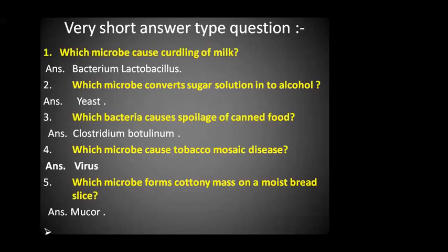Let's move to very short answer type questions. Which microbe causes curdling of milk? The bacterium is Lactobacillus. Question number 2: which microbe converts sugar solution into alcohol? The answer is yeast, which is a fungus. Third: which bacteria causes spoilage of canned food? A bacteria called Clostridium botulinum causes spoilage of canned or tinned food. Question number 4: which microbe causes tobacco mosaic disease? Tobacco mosaic disease is caused by a virus. Which microbe forms cottony mass on a moist bread slice? Mucor, a type of fungus, forms cottony mass on a moist bread slice.